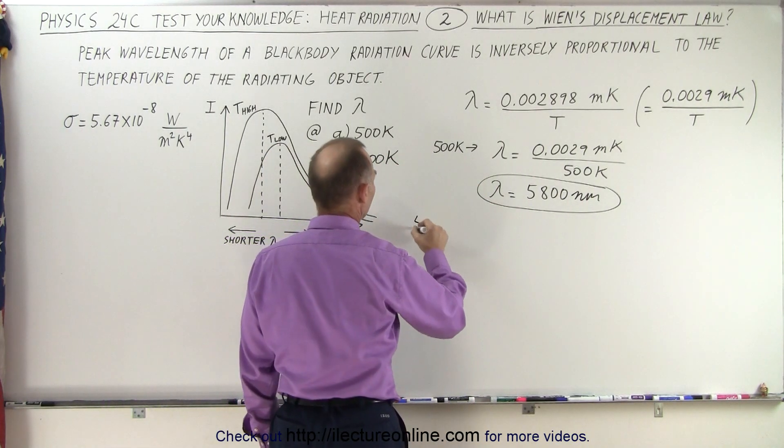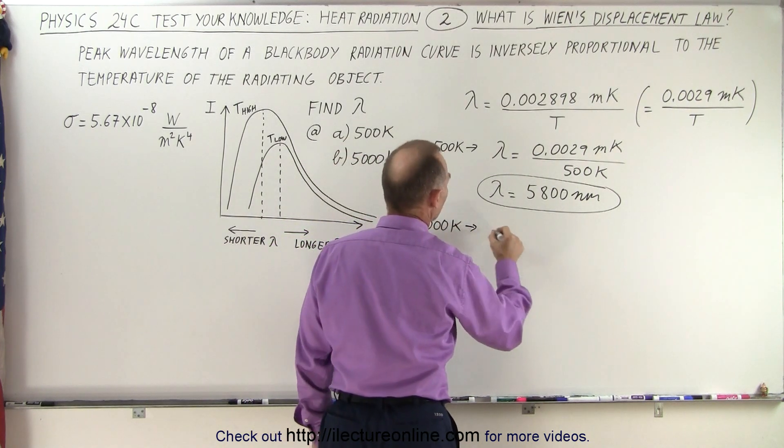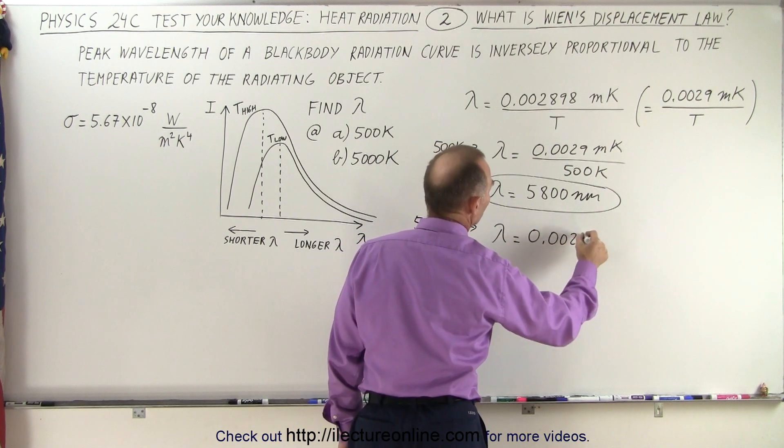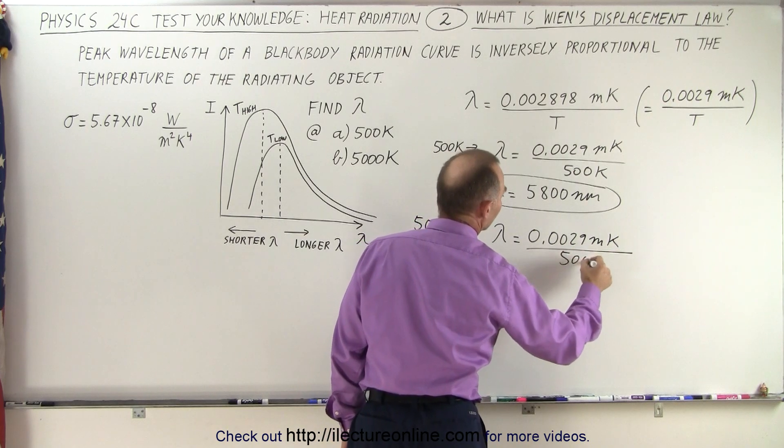If we now do it for 5,000 Kelvin, which begins to approach the surface temperature of the sun, we would then have lambda equal to 0.0029 meter times Kelvin divided by 5,000 Kelvin.